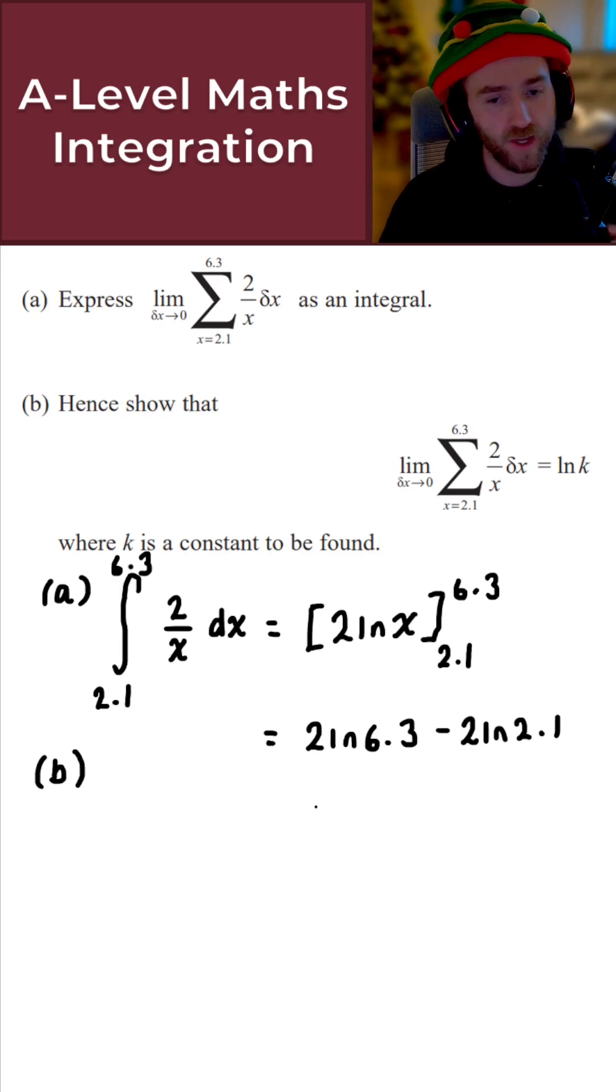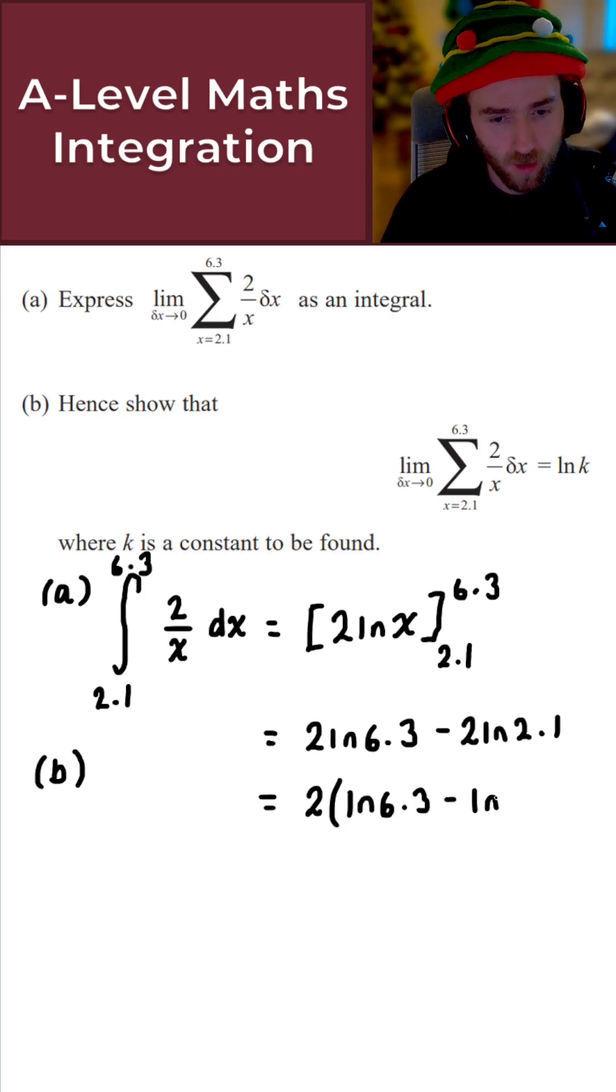Perfect. What I can do here is factor out a 2, which gives 2 times bracket ln(6.3) minus ln(2.1). Good stuff.